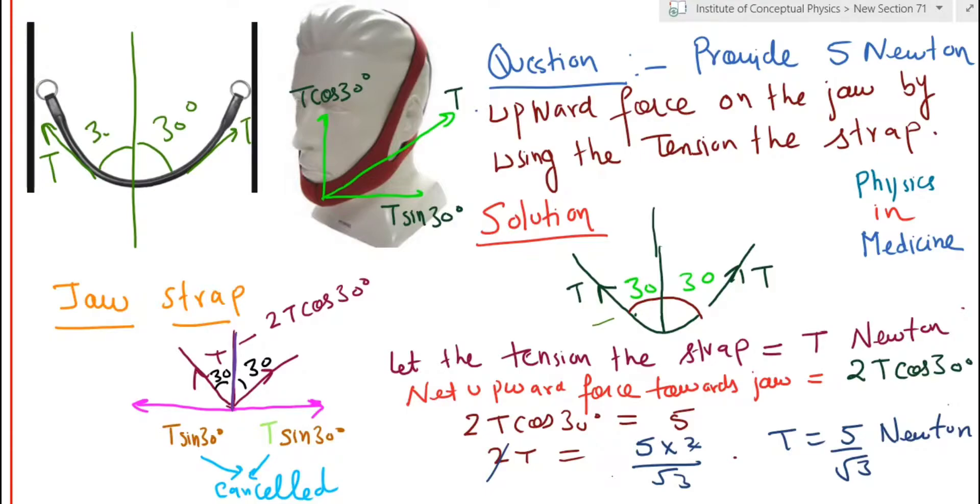Now, how do you ensure that the jaw is maintained at the same position? Doctors, especially orthopedicians, would use something called a jaw strap to keep the position of the jaw intact.